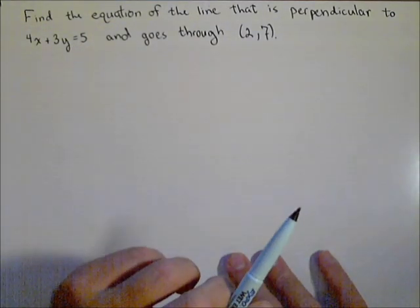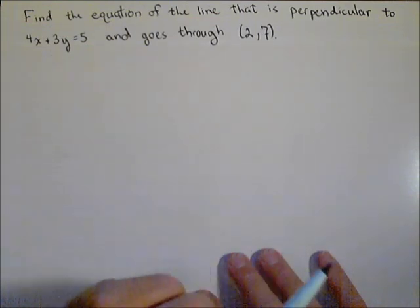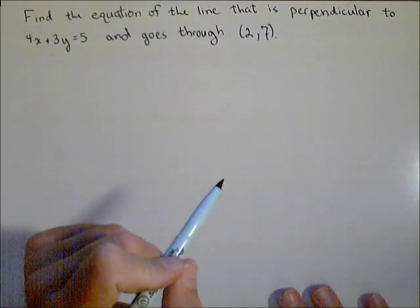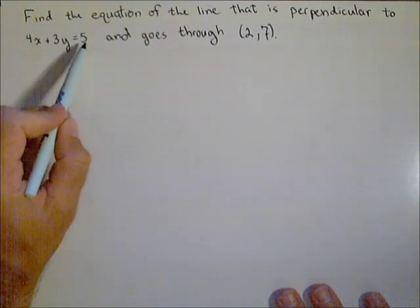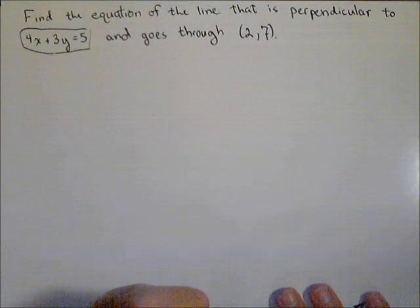Now when two lines are perpendicular, we know something about their slopes. They're what are called negative reciprocals or opposite reciprocals. So what we need is the slope of this first line, and we can find the slope of the line we're looking for.